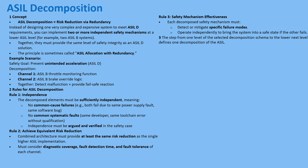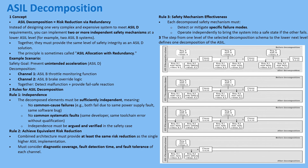Take the example: prevent unintended acceleration — clearly an ASIL D safety goal. Part 9 lets you decompose it into two channels. Channel one could be an ASIL B throttle monitoring function; channel two, an ASIL B brake override function. If either works correctly, the hazard is stopped. The notation is vital: in B(D), the letter outside the parentheses — B — tells you the integrity level required for that specific element; the letter inside — D — tells you the original safety goal this element contributes towards. So an ASIL B element is helping satisfy an overall ASIL D goal.